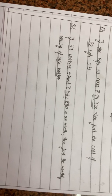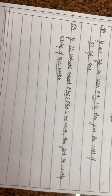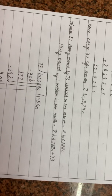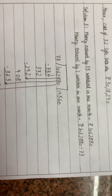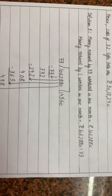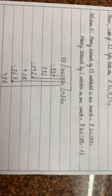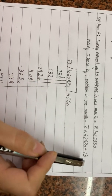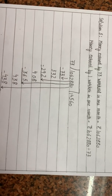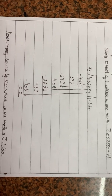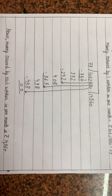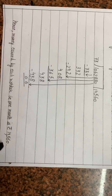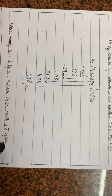What will we do in this? Divide. When more workers' total earnings are given and we need to find one worker's earnings, we divide. Let's look at the solution. Money earned by 73 workers in one month is Rs. 10,62,880. Money earned by one worker in one month is 10,62,880 divided by 73. You can easily get the answer from the division. Hence money earned by each worker in one month is Rs. 14,560.